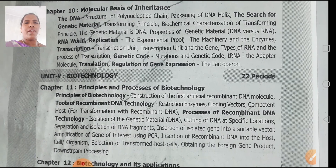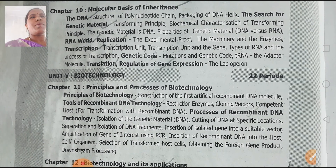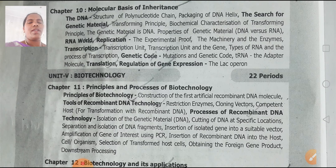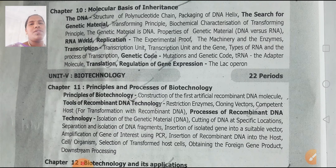Unit 5 is Biotechnology — Jiva Shika Shastra. Chapter 11 is the continuation of molecular biology: Principles and Process of Biotechnology, including principles of biotechnology, tools of recombinant DNA technology, and process of recombinant DNA technology. Genetics, molecular biology, and biotechnology are three very important units.